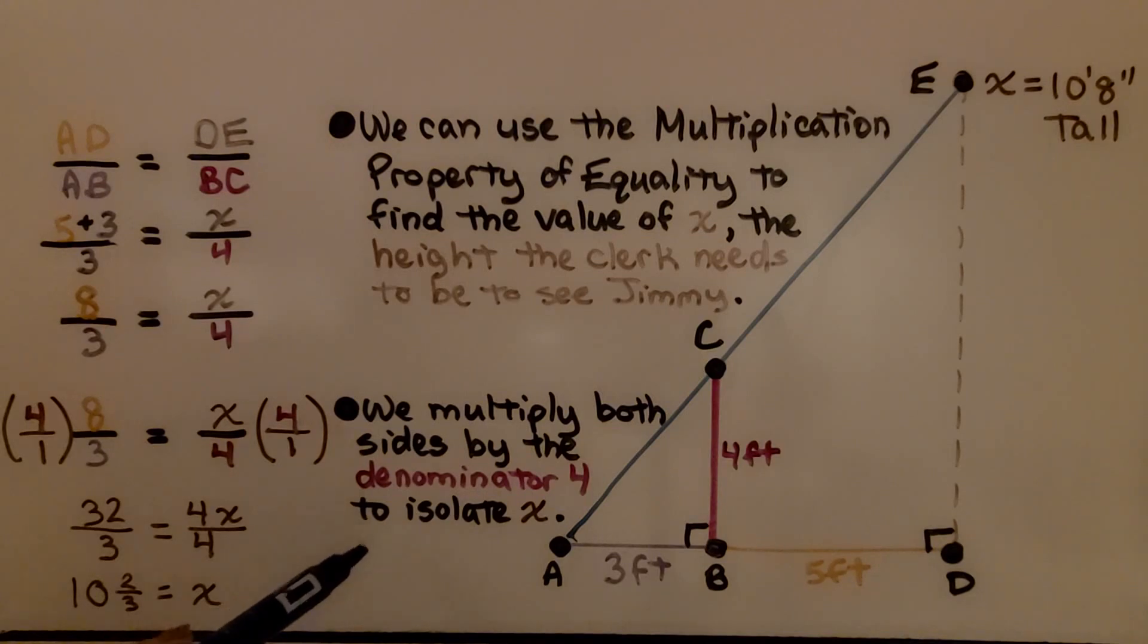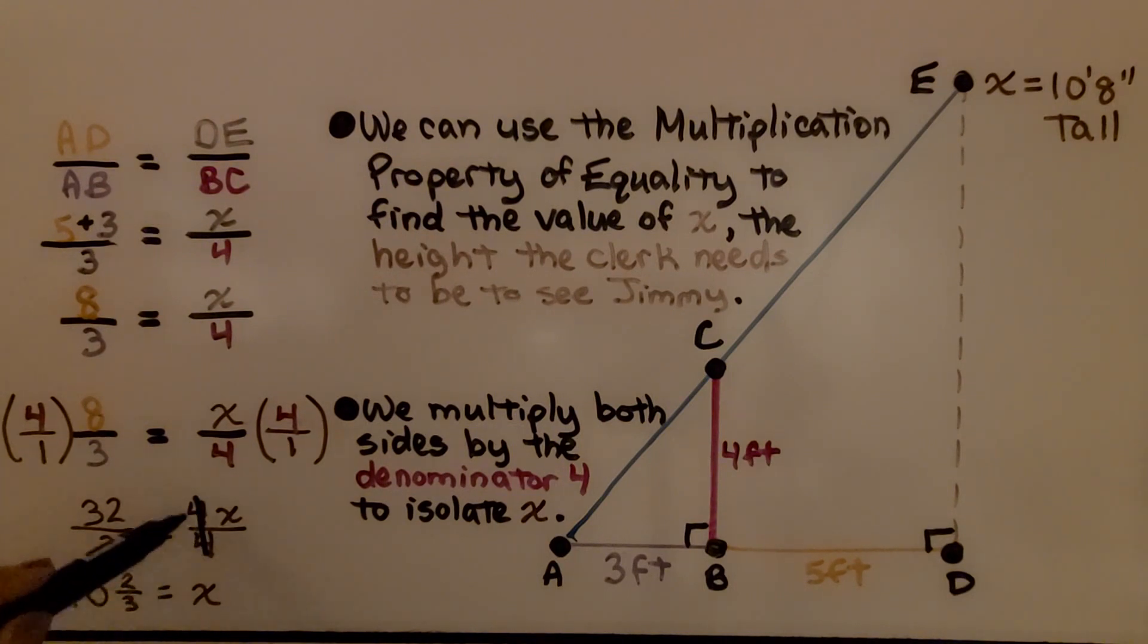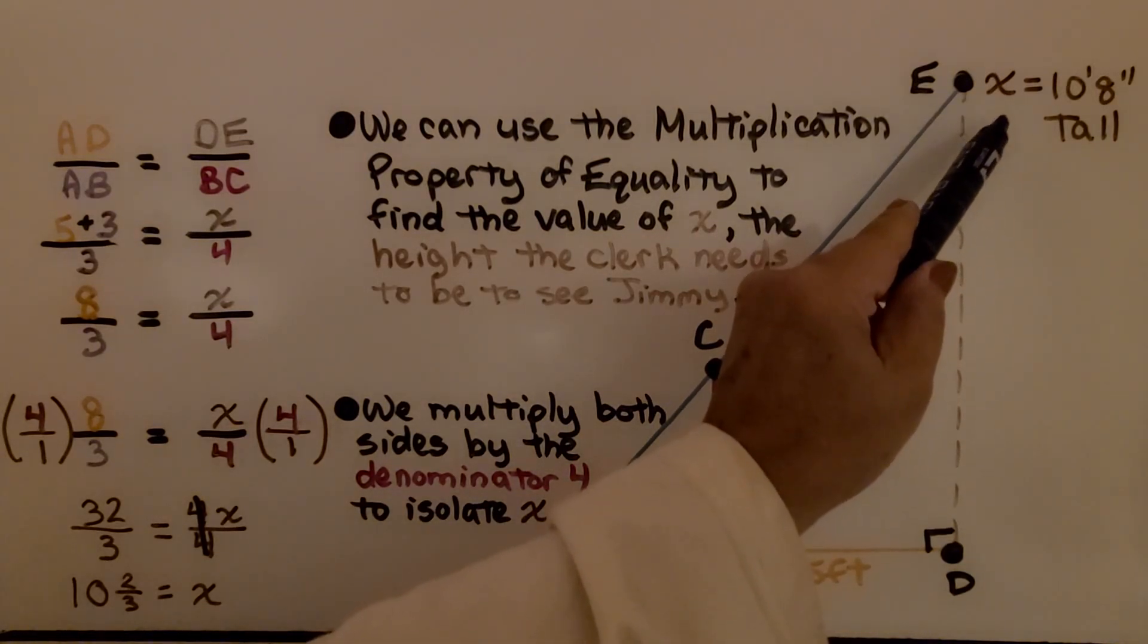We multiply both sides by the denominator 4 to isolate that X. I write it over 1, so it's easier to multiply straight across. We have 4 times 8, which is 32, over 1 times 3, which is 3. And we have 4 times X, which is 4X, over 4 times 1, which is 4. We have the same numerator and denominator here, so that makes 1X on this side. On this side, we do 32 divided by 3, and we get 10 and 2 thirds. That tells us that the clerk would need to be 10 and 2 thirds feet tall, which is 10 feet 8 inches tall.